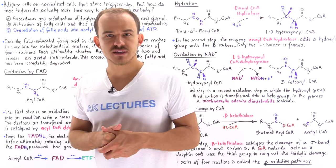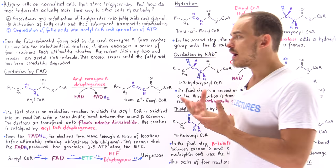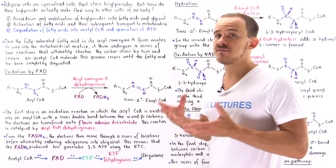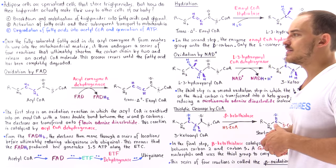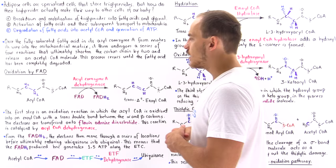The four steps of beta-oxidation are: step one, oxidation by FAD (Flavin Adenine Dinucleotide); step two, a hydration step; step three, a second oxidation step by NAD+; and step four, thiolytic cleavage by a coenzyme A molecule.